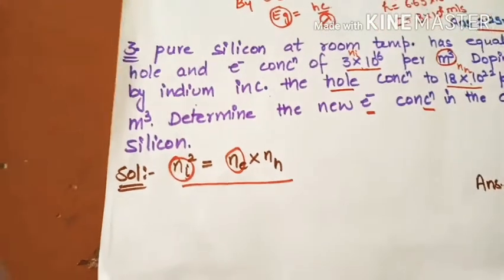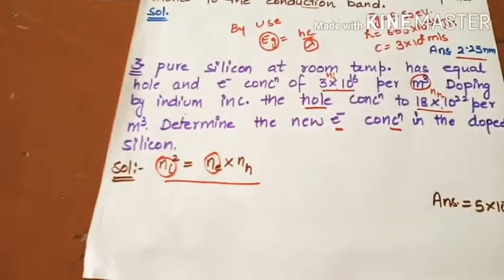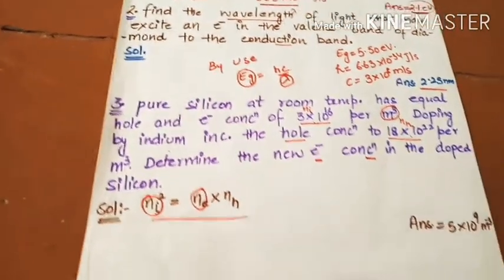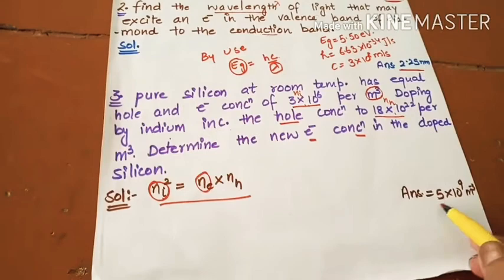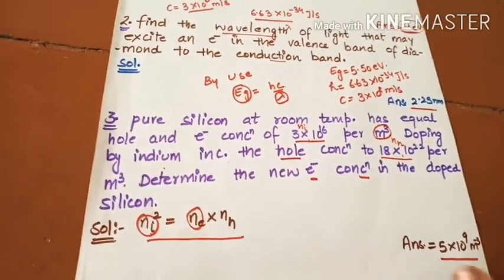If you use this formula, Ni square is equal to Ne into Nhi. The answer is 5 into 10 power 9 per meter cube.